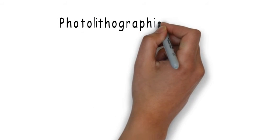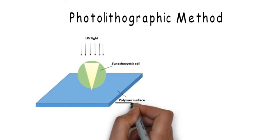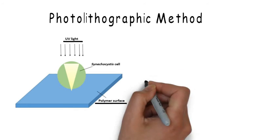Next, a photolithographic method was used to get an image of light pattern adjacent to the cell. Synechocystis cells were attached on the surface of a photopolymer and shown with UV light from above. The cells were then removed and the surface of the photopolymer was observed with atomic force microscopy.